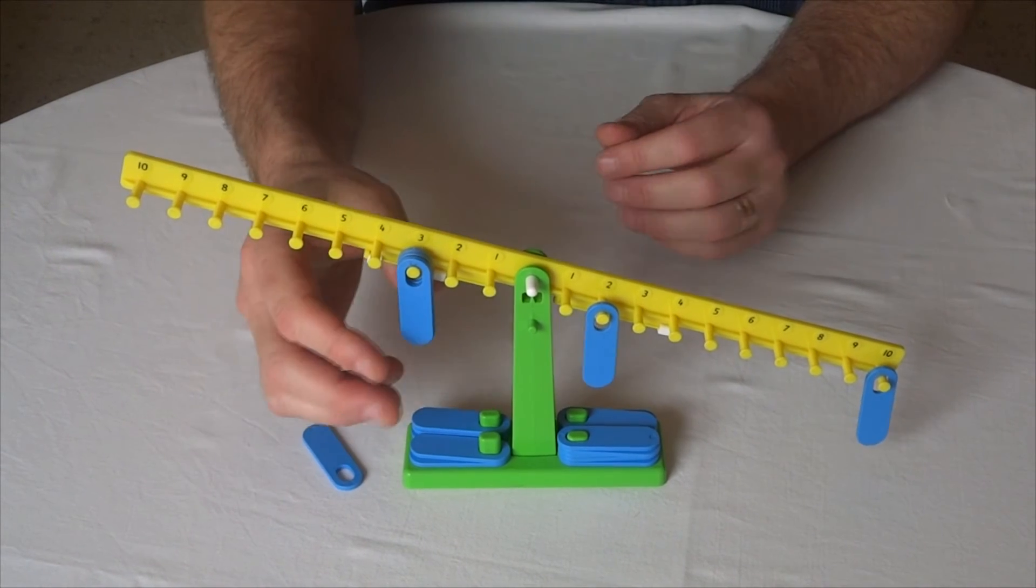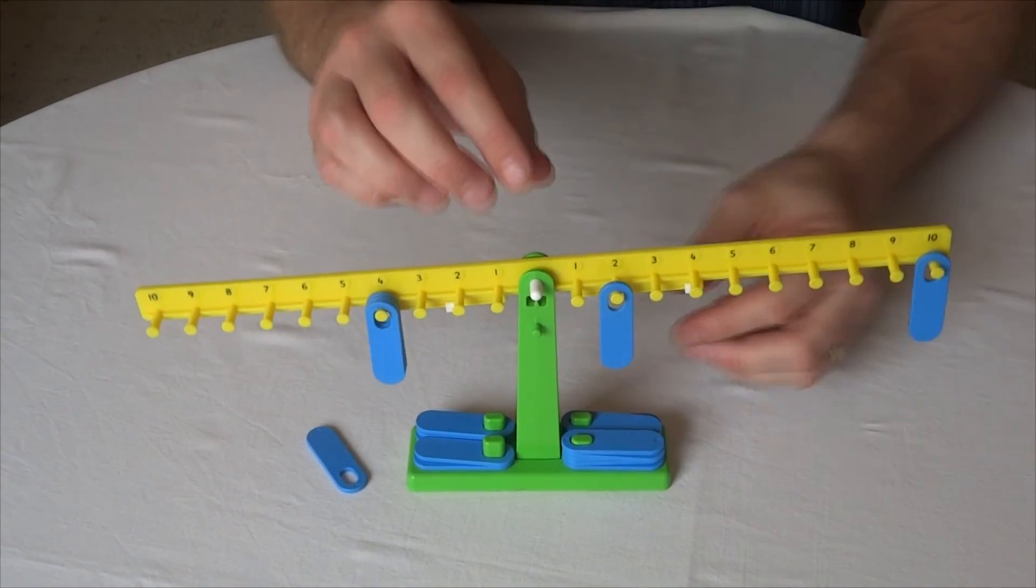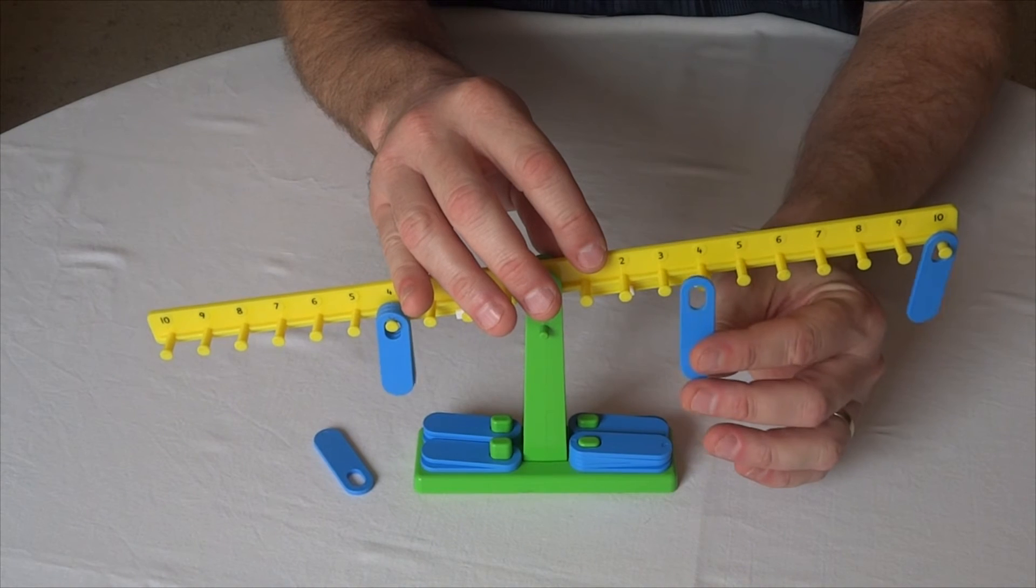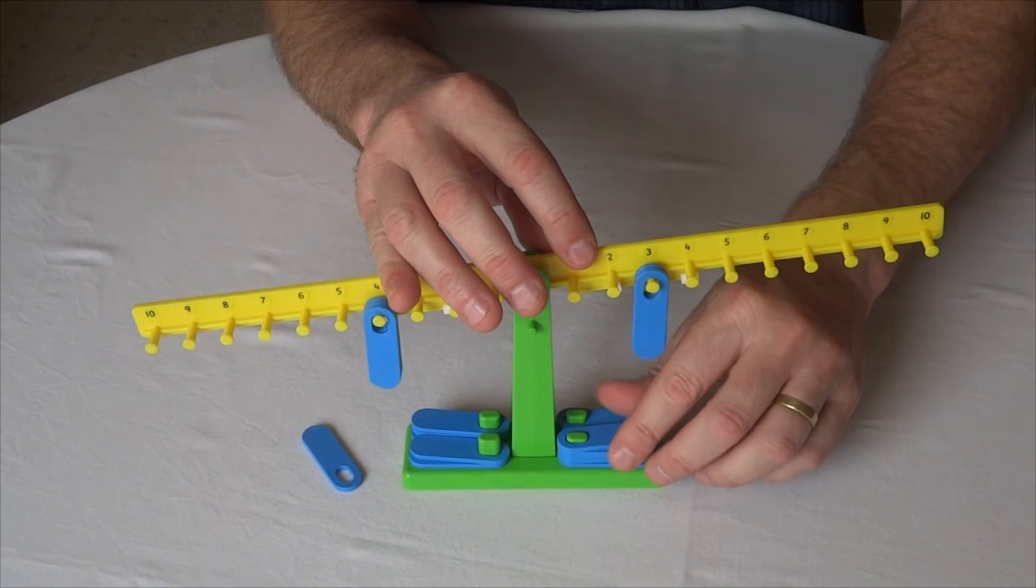Let me show you what I mean. So in this case here, let's go back to three weights on four, and now we could actually put on this side here four weights on the three. It doesn't matter if they don't all fit on one side.